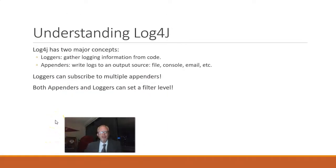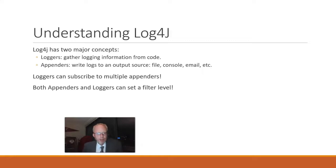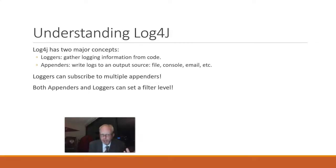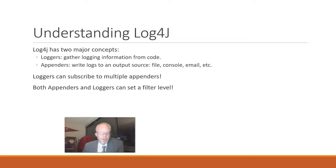Understanding Log4j — it really has two major concepts. Loggers are things that gather logs in code, so we can reference a logger when we want to make a log statement. Appenders take those log messages and publish them somewhere. What's neat is that loggers can subscribe to multiple appenders. So if we want to write to a file but also alert on a fatal — maybe by sending a text message — we could use an appender to do that. We can filter log levels both on the logger and on the appender.